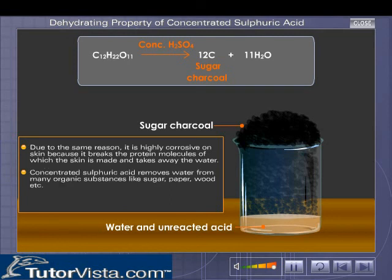Concentrated sulfuric acid removes water from many organic substances like sugar, paper, wood, etc. It is therefore a dehydrating agent.